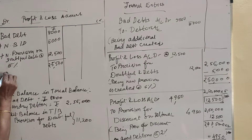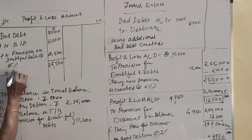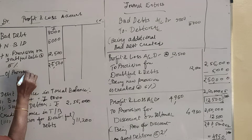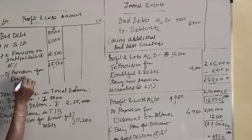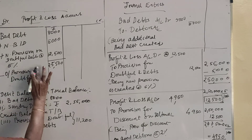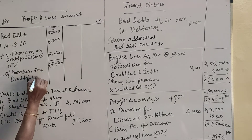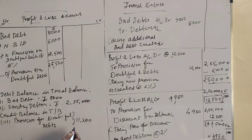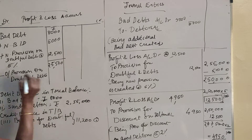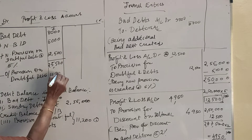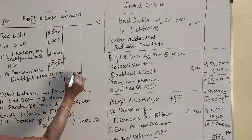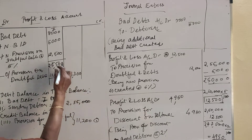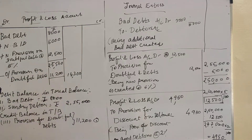From that, you have to subtract the old provision — old provision for doubtful debts, or old provision on doubtful debts. It has given the sum. How much? 11,200. We have to subtract this: 11,200. When you subtract this, the result is 14,300.